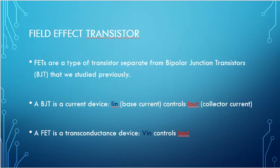We're going to look at field effect transistors. FETs are a type of transistor separate from bipolar junction transistors (BJT) that we studied previously. When we looked at 2N3904s, that was a BJT. A BJT is a current device: base current Iin controls Iout, the collector current. A FET is a transconductance device where the input voltage Vin controls the output current Iout.